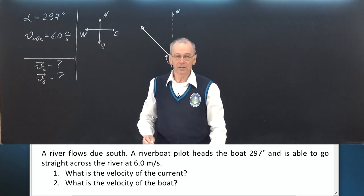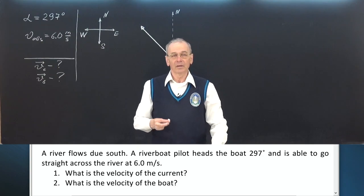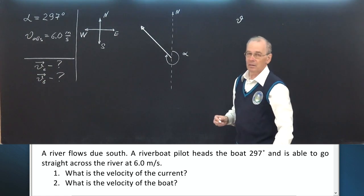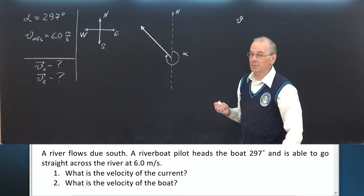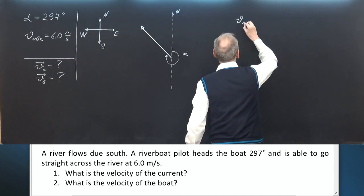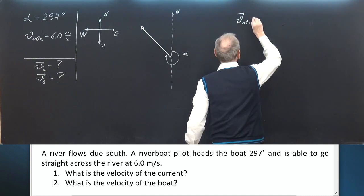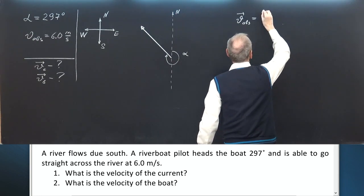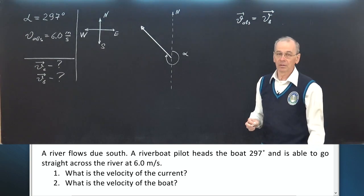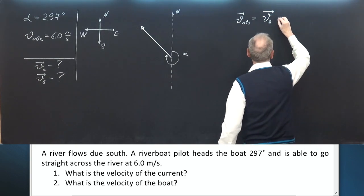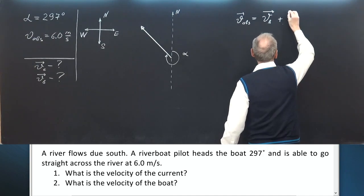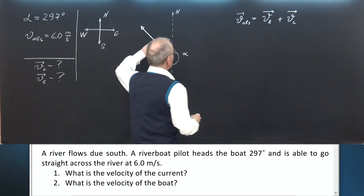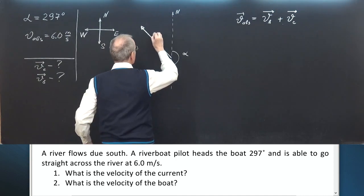Now we can use the formula for addition of velocities. The absolute velocity — the velocity with respect to ground — is the sum of two velocities: the velocity of the boat with respect to water plus the velocity of the current with respect to ground. This is the velocity of the boat, V_boat.